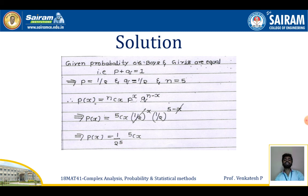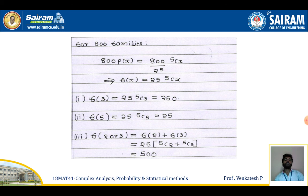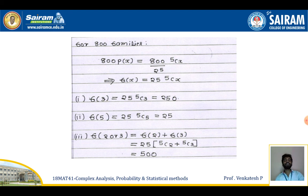This equation is applicable for a single family. To estimate for 800 families, we multiply the probability by 800 to get the frequency distribution: F(x) = 25 × 5Cx. For exactly 3 boys, replacing x = 3 gives F(3) = 25 × 5C3 = 250, so exactly 250 families will have exactly 3 boys. For 5 girls (x = 5), F(5) = 25 × 5C5 = 25, so 25 families will have exactly 5 girls.